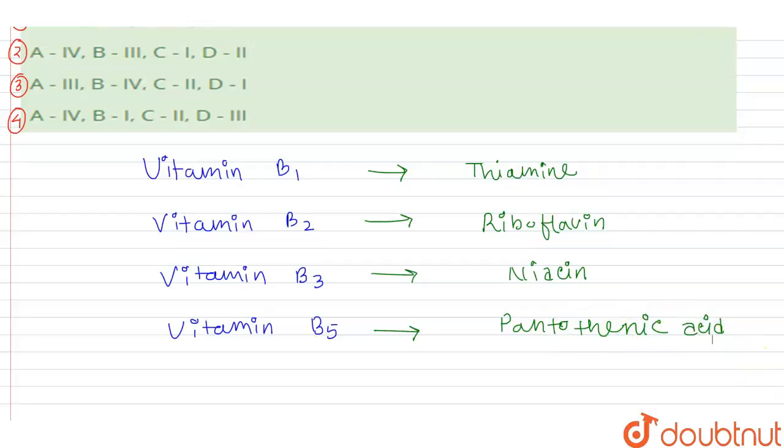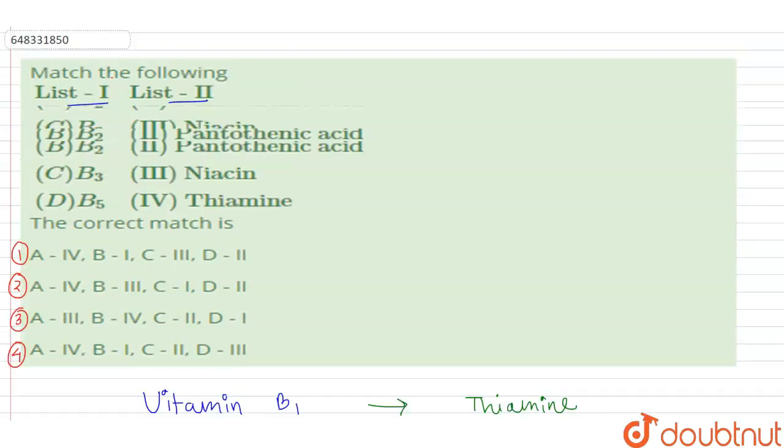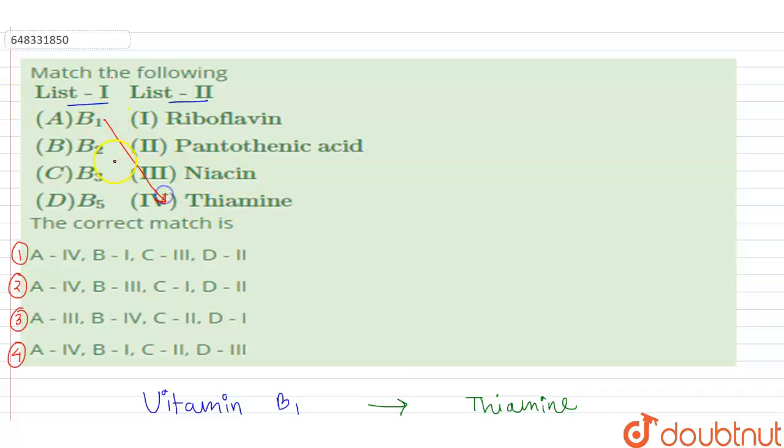So we just have to match the following above. So we can see that vitamin B1 means that is thiamine, vitamin B2 means that is riboflavin, vitamin B3 is niacin, and vitamin B5 is pantothenic acid.